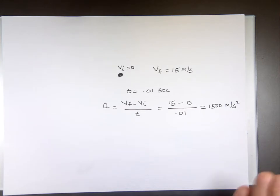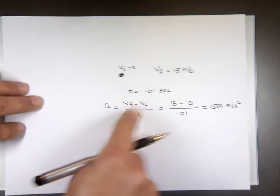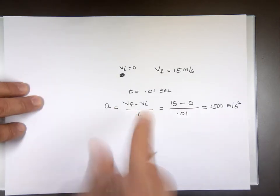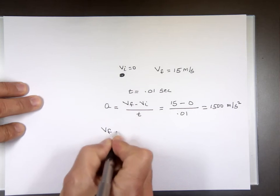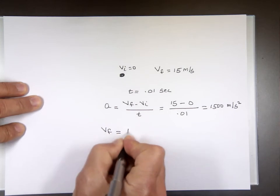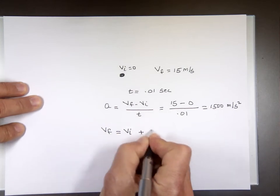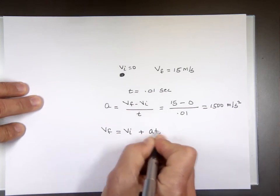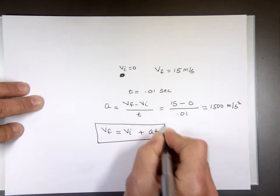But that's where the acceleration is — change in velocity over change in time. So that equation is: V-final equals V-initial plus A times T. That's one of our four equations we will be using.